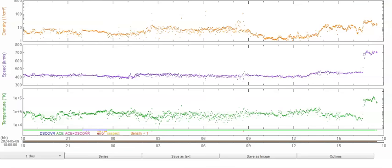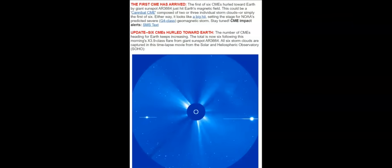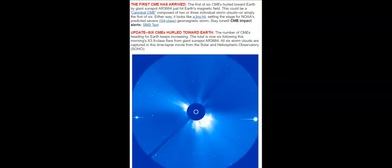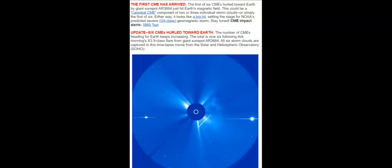Let's take a look at something else real quick. Space weather is picking it up also. It's one of the links on our website at bpearthwatch.com. It says, the first CME has arrived. The first of six. I said five. Now, there's six. The first of six hurled toward Earth by giant sunspot AR-3664 just hit the Earth's magnetic field. That's what you just saw. The satellites are not lying. When the impact comes across them, it picks it up right then, takes a very short time to transmit that information back to Earth where it can be decoded. This total is now six following the morning's X3.9 class flare from giant sunspot AR-3664. All six storm clouds are captured in the time lapse that you're seeing from SOHO. And you've got Mercury and Jupiter also.